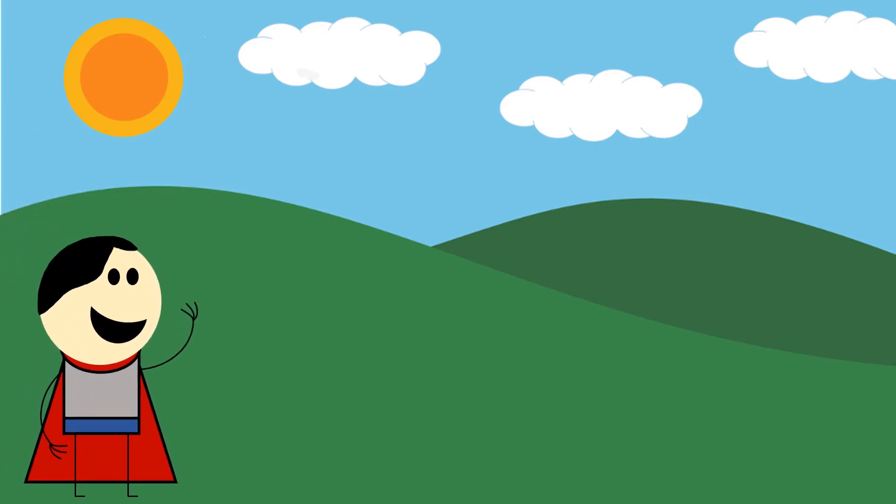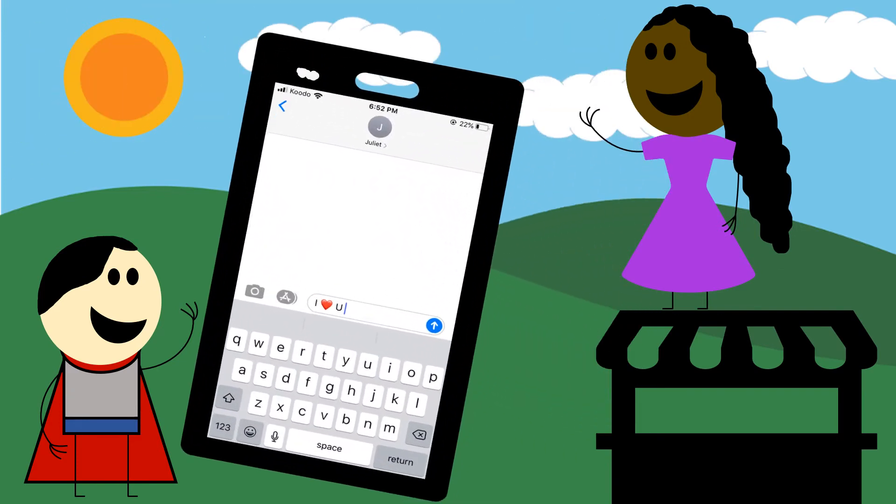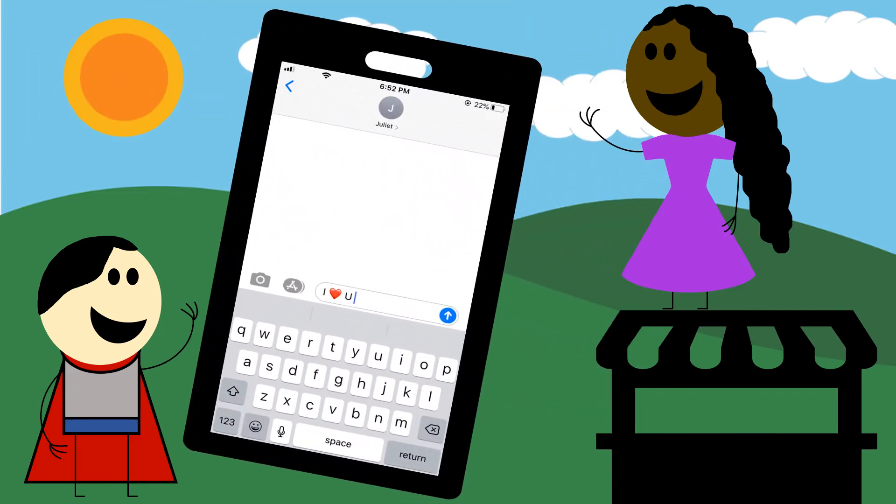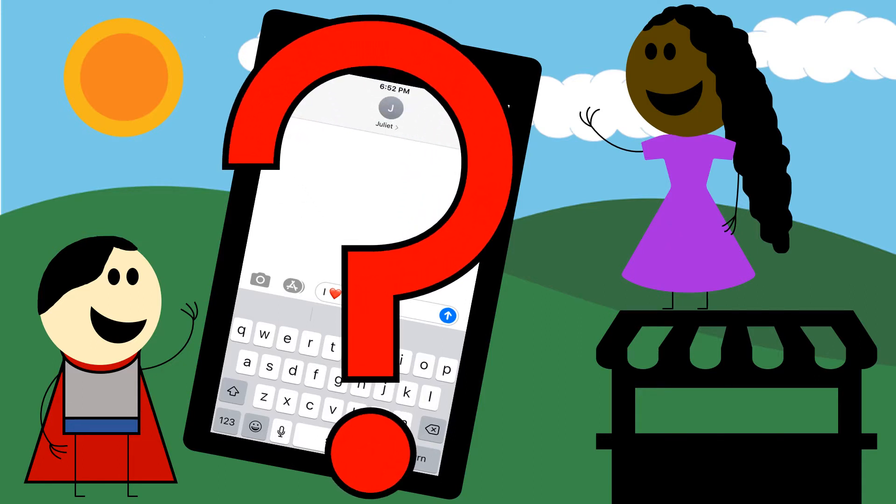Romeo is getting ready to send an important text, one in which even the tiniest change could completely alter its meaning. How does he know that the message Juliet receives will be the same as the one he sent? And how does he know she'll get it tonight and not tomorrow?